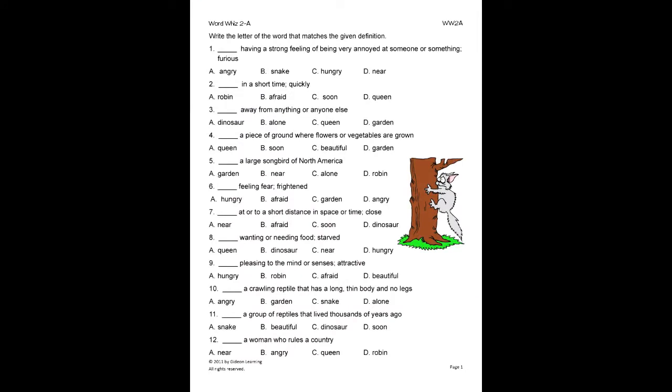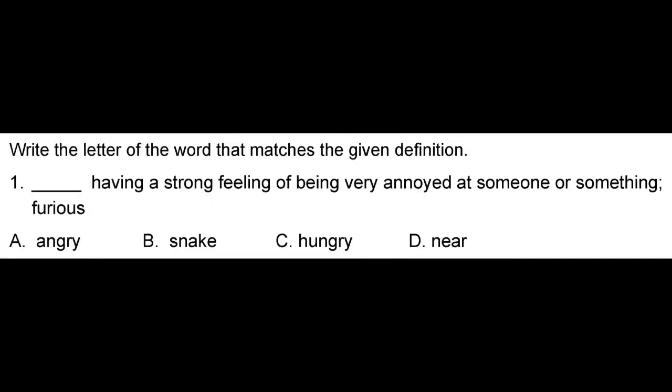On this exercise, the student will write the letter of the word that matches the given definition. Let's do number one for example. First, read the given definition: having a strong feeling of being very annoyed at someone or something, furious. Now look at each answer choice: angry, snake, hungry, or near. Since the word angry best matches the definition, we know angry is the correct choice. So we will circle the correct answer and write the letter on the line.